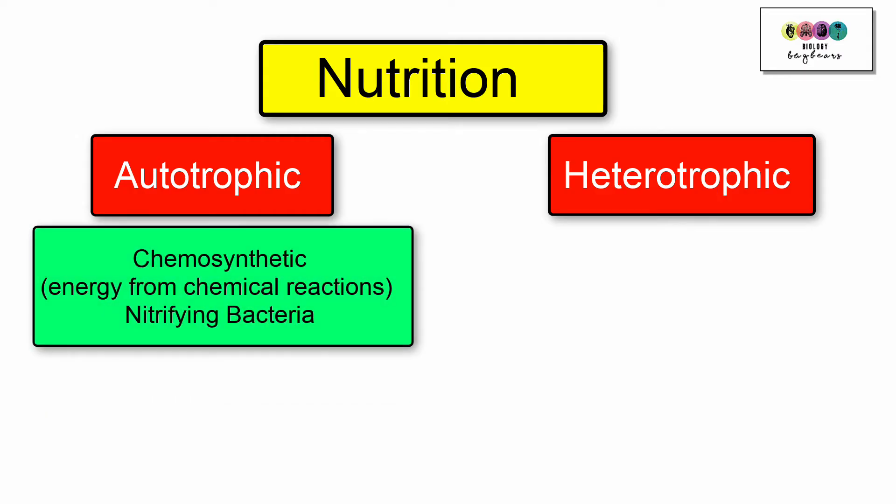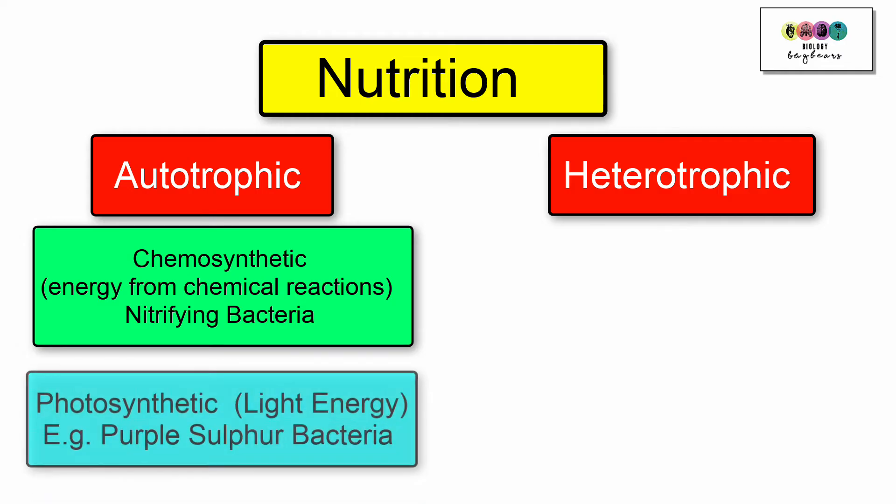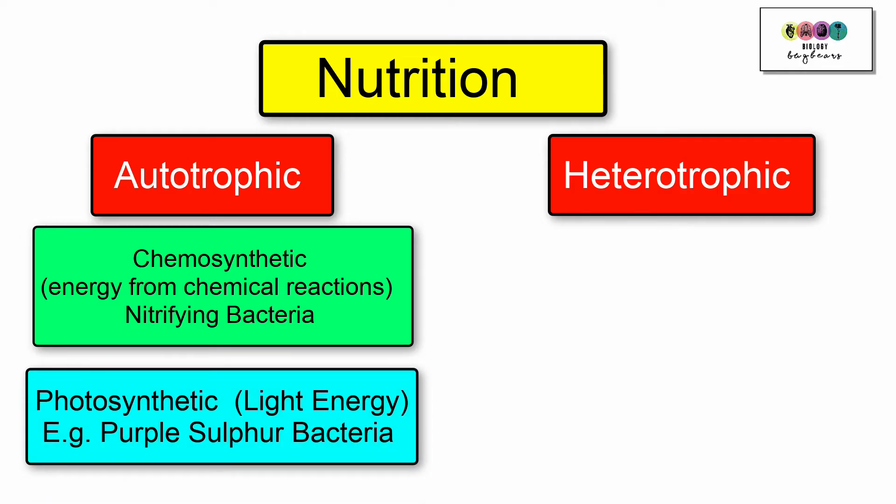When we think of autotrophic bacteria, we're thinking about where they get the energy to make their own food from. Chemosynthetic bacteria gain energy from chemical reactions. Examples would be the nitrifying bacteria in the nitrogen cycle. Photosynthetic bacteria use light energy to make their own food. Examples would be purple sulfur bacteria found in hot springs.